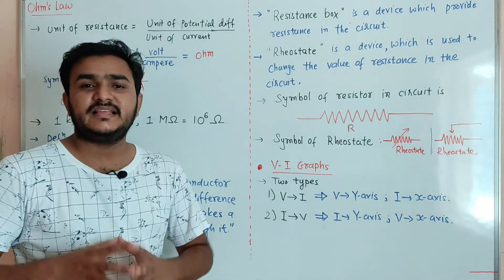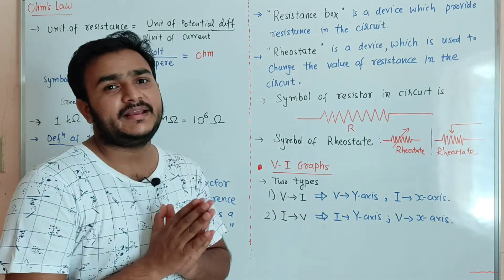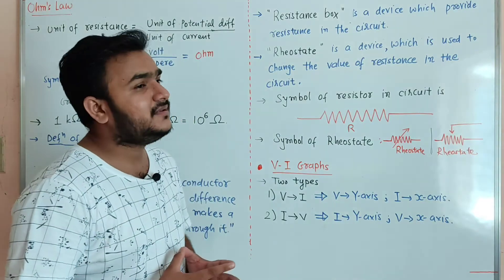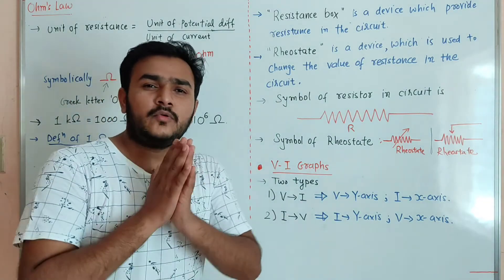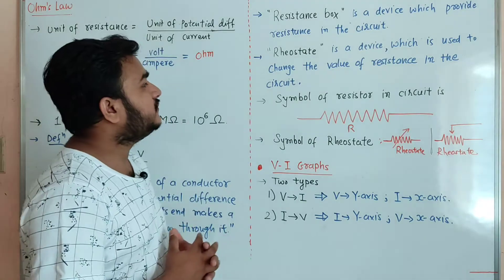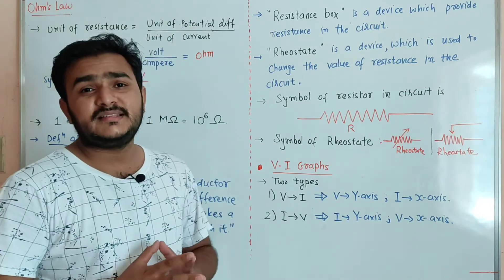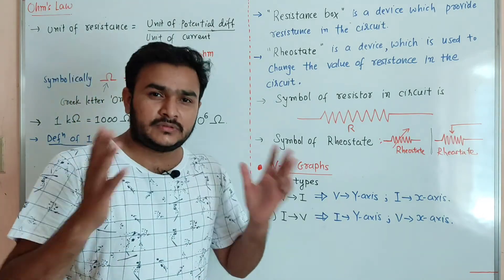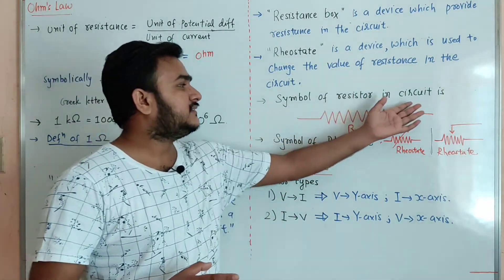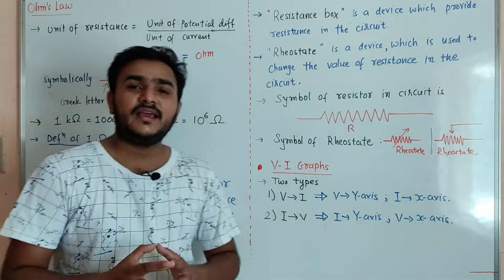The resistance box is a device which provides resistance in a circuit and supplies a constant amount of resistance. The rheostat is a device which is used to change the value of resistance in the circuit. The symbol of a resistor in a circuit and the symbol of a rheostat in a circuit are shown here. Now let us discuss the V-I graph, that is the potential difference versus current graph.